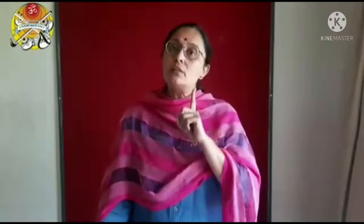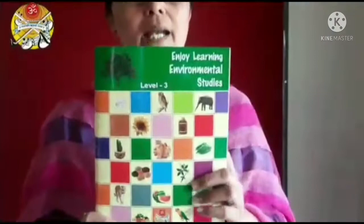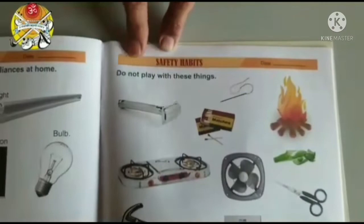Children, I hope you all might have understood the safety rules. You have to learn all the safety rules by heart. Now it is study time. So children, which book is this? This is our EBS activity book. Open page number 71, and the heading of the topic is safety habits.